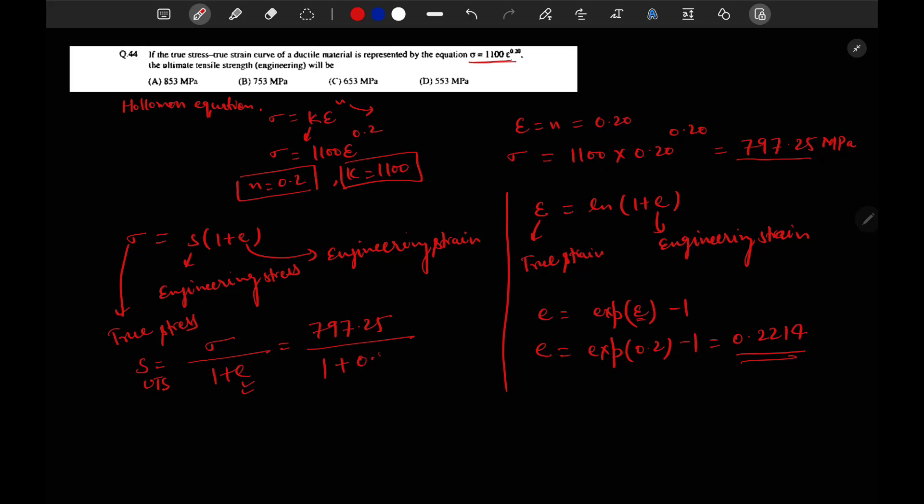1 plus 0.2214, that means it will be equal to 652.73. The ultimate tensile strength engineering will be nearly 653 MPa. Option C is the correct one.